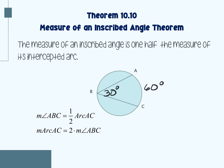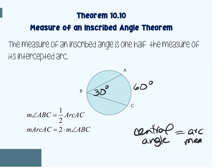Remember, central angles and their intercepted arcs are equal — the central angle equals the arc measure. But for an inscribed angle, the angle will be half of the arc measure.